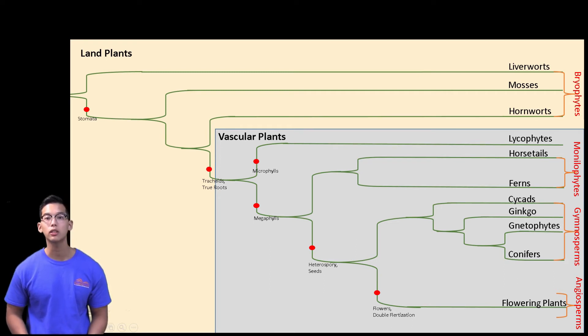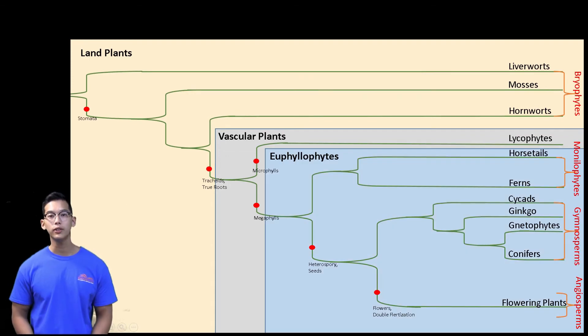Our euphyllophytes are known as our true leaf plants as a result of their megaphylls, or leaves with venation. Their synapomorphies include multiflagellated sperm and roots with endogenous branching. Our euphyllophytes include our monilophytes, gymnosperms, and angiosperms.